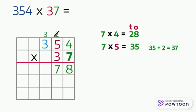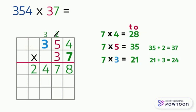Now we multiply 7 by the hundreds digit, which is 3 — seven times three equals 21. Then we add the carry, which is 3, giving us 24. Since there are no more digits to multiply by 7, we write 24 directly in the answer line. Don't forget to cross out the carry. So 354 times 7 equals 2,478.